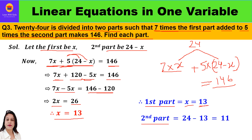The second part is 24 minus x, which is 24 minus 13, that is 11. You can check: 13 plus 11 is 24. So 24 has been divided into two parts — the first part is 13 and the second part is 11.